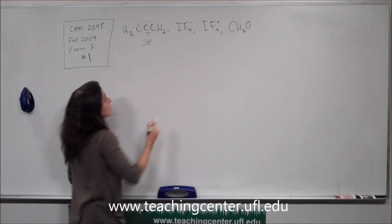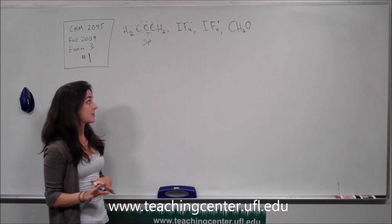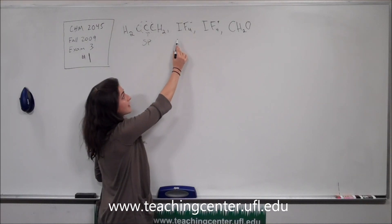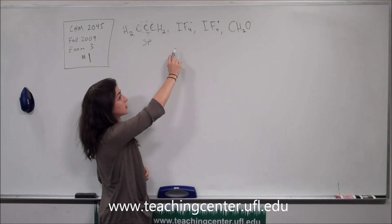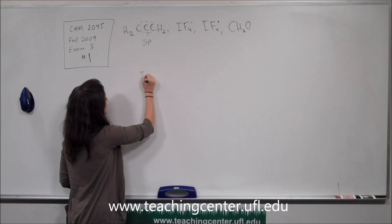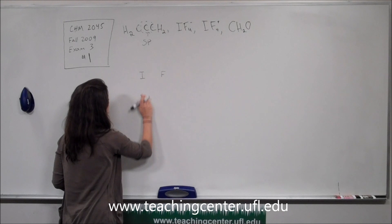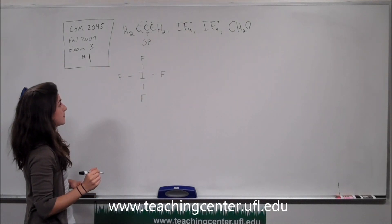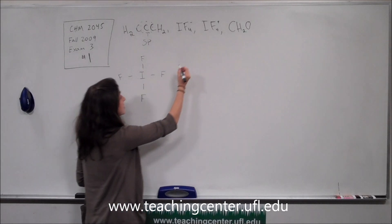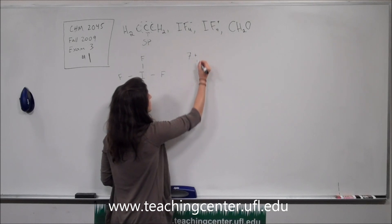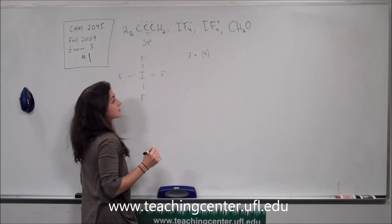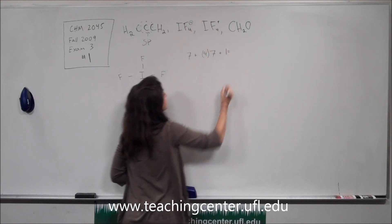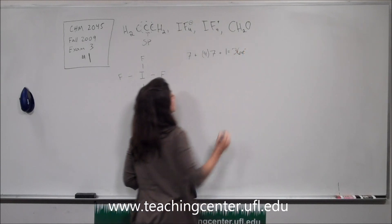Now we're going to look at iodine fluoride with a negative charge. We're still predicting hybridization, so we need to know the shape. Iodine is going to be the central atom because it is the fewer-occurring atom in this molecule. We'll put down iodine with four fluorines attached. We need to figure out how many valence electrons we have: iodine gives 7, plus 4 fluorines each giving 7, and we add 1 for the negative charge.